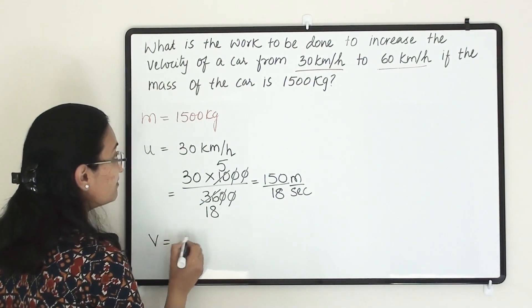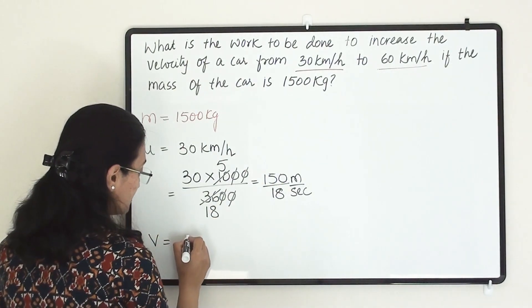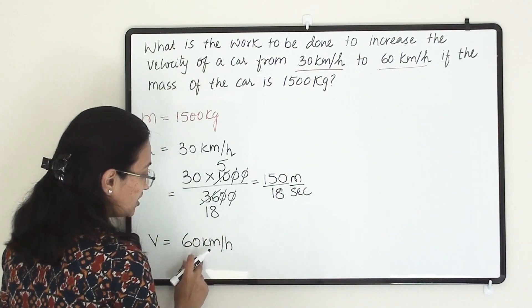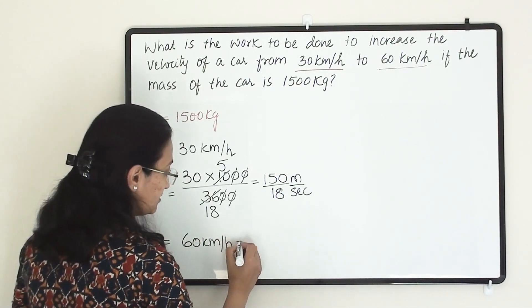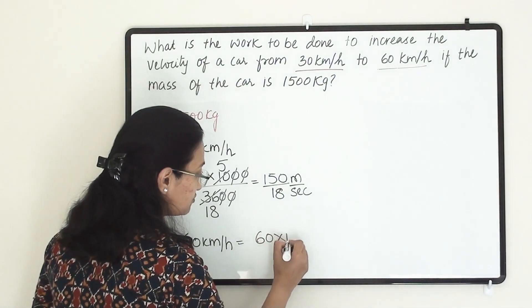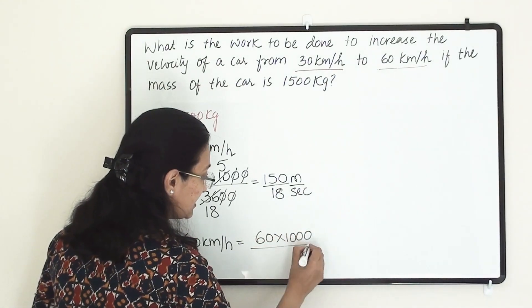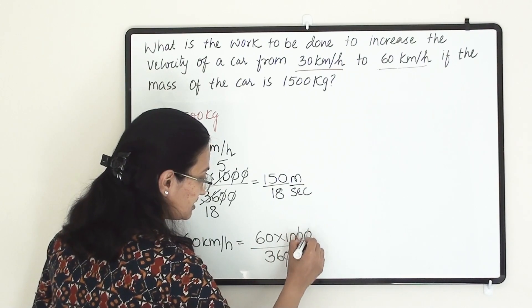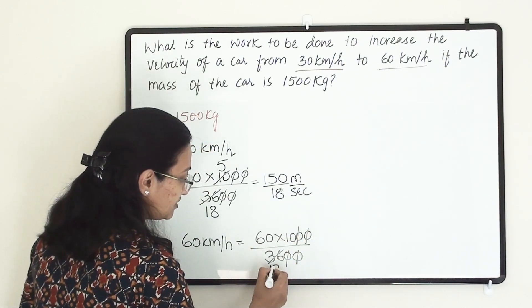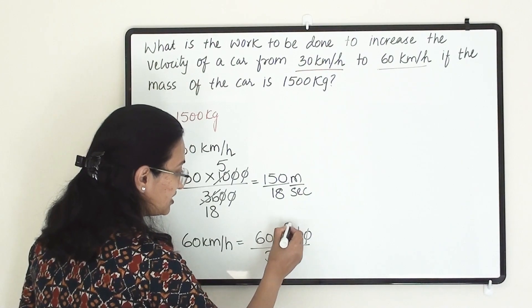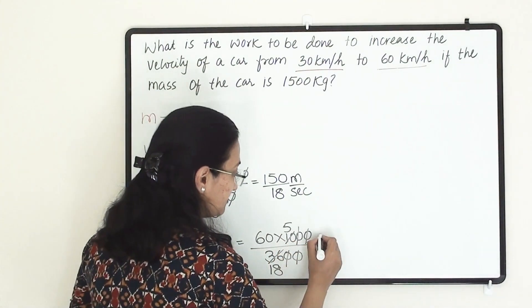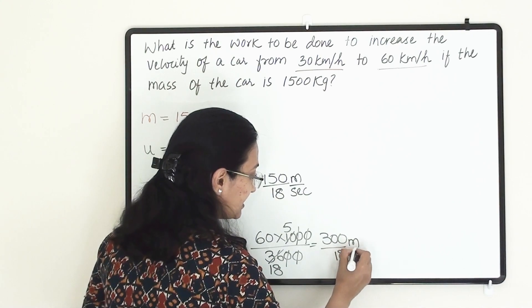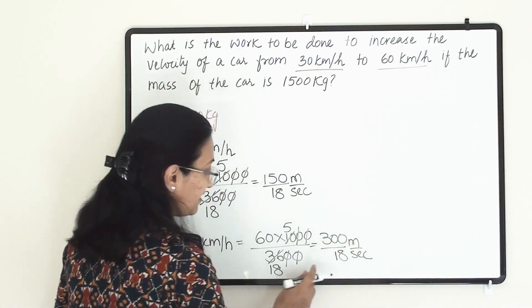Similarly, the final velocity is 60 km per hour. We need to convert this into meters per second: 60 × 1000 divided by 3600. Cancelling two zeros gives 18 in the denominator and 5 in the numerator, so the final velocity is 300 divided by 18 meters per second.